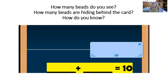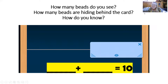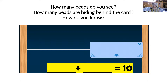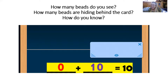How many beads do you see now? That's right. There are zero beads — none. I see no beads at all. So if there are no beads showing, how many beads are hiding behind the card? Oh, that was so good. There are 10 beads hiding. How did you know that? You just knew? You are smart. Did you make it on your number rack? That's super smart. Let's make that equation: zero plus 10 equals 10. Now let's read that together: zero plus 10 equals 10.